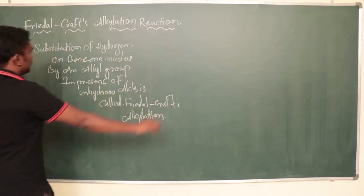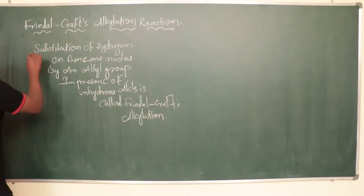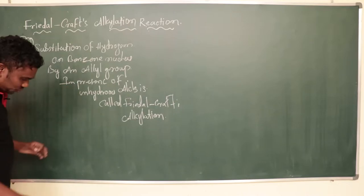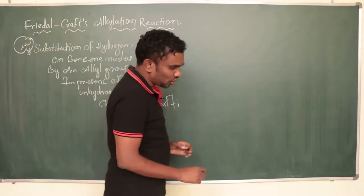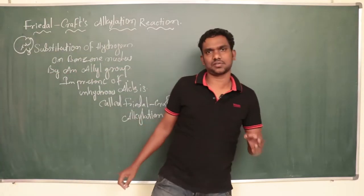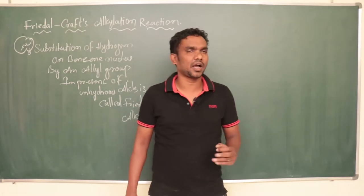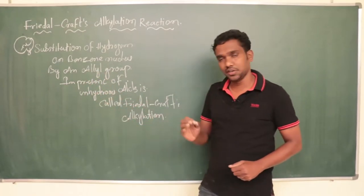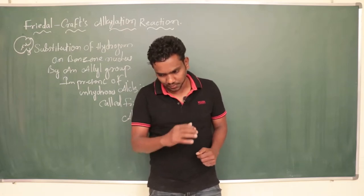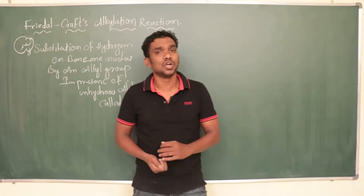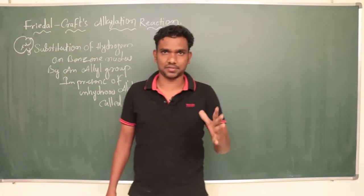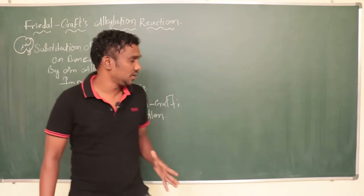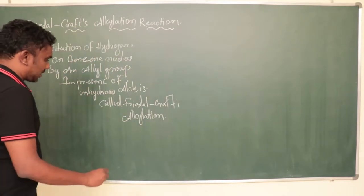So the definition is: the substitution of hydrogen on the benzene nucleus by an alkyl group in the presence of anhydrous AlCl3. Here, AlCl3 is a Lewis acid — it has one empty orbital.